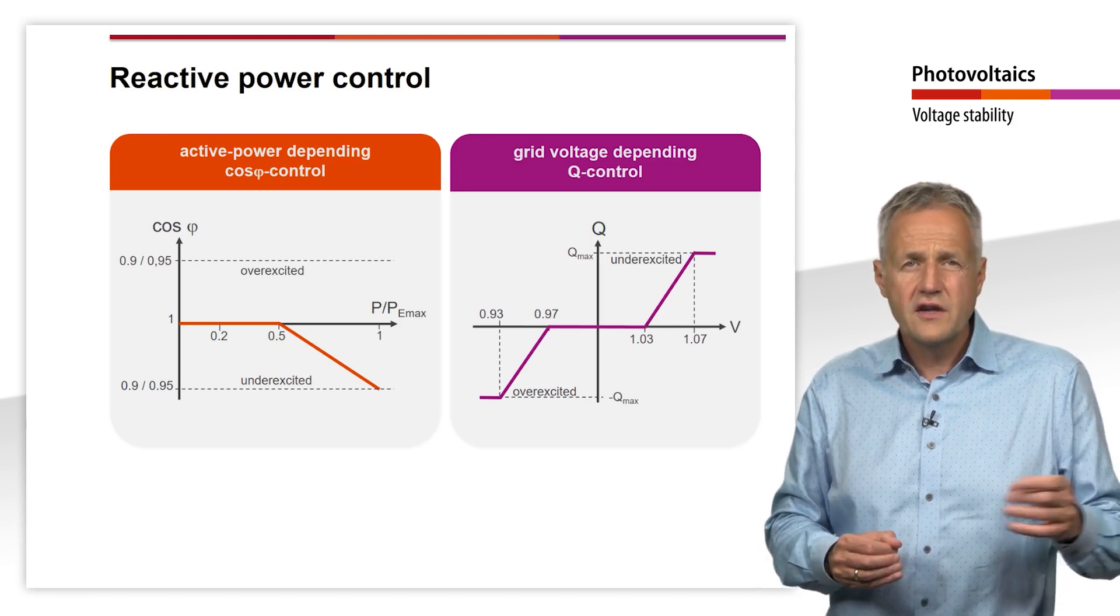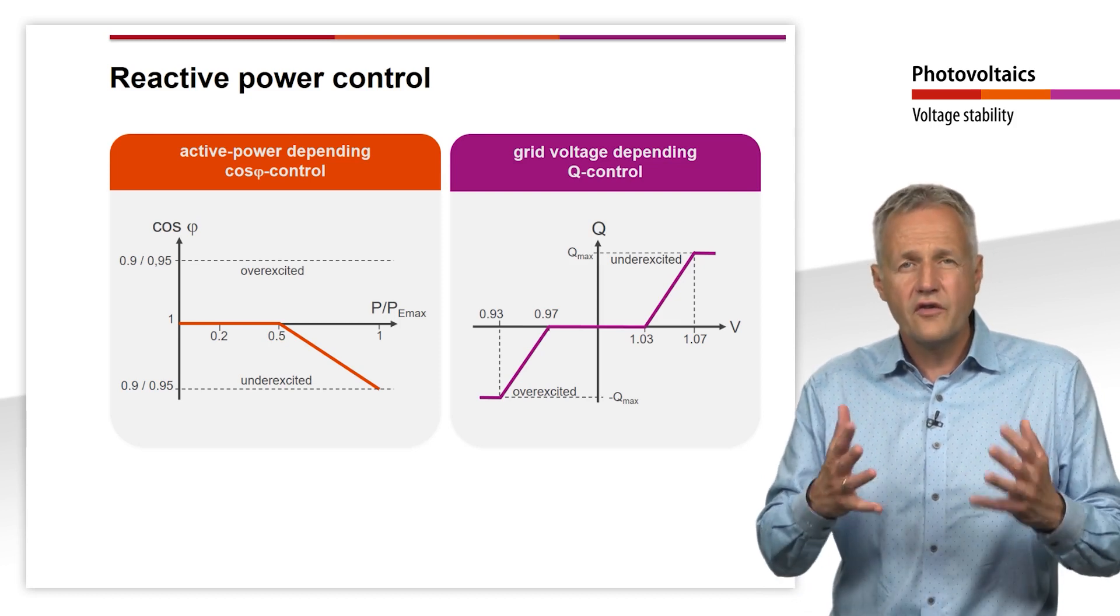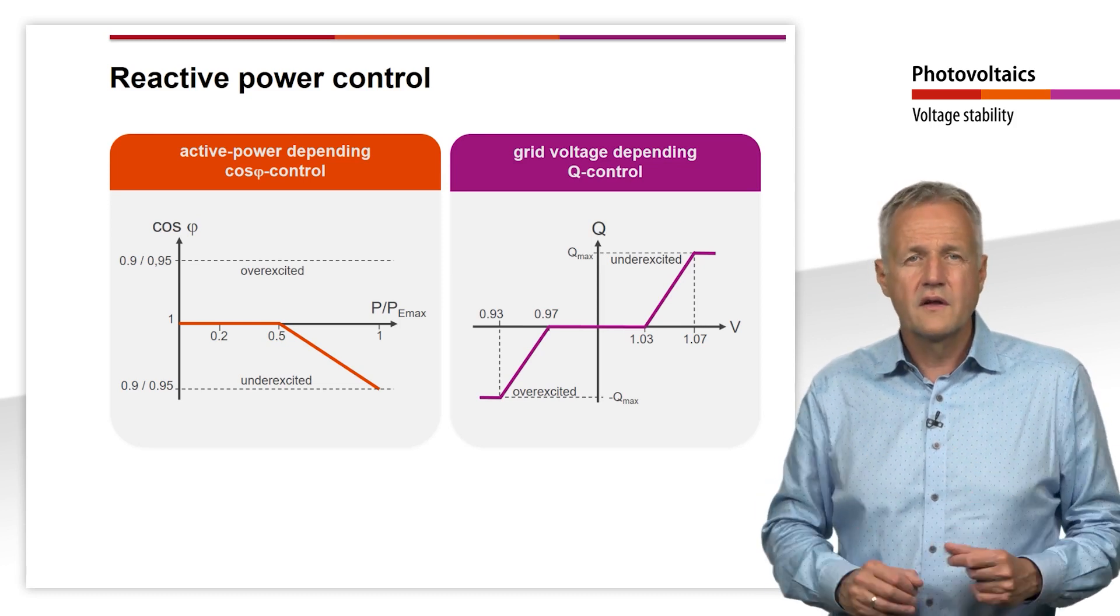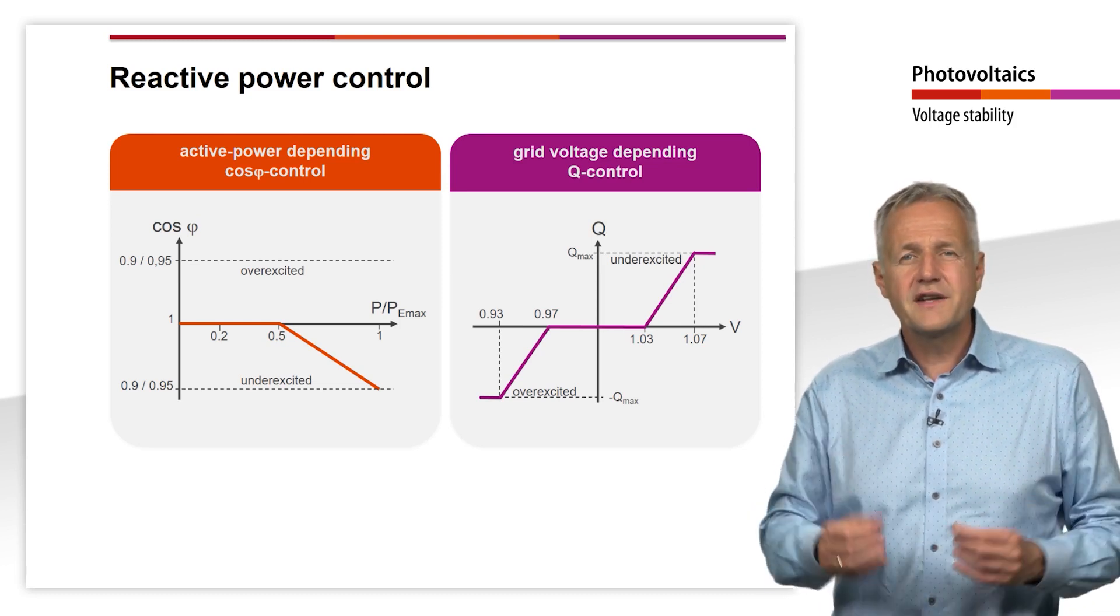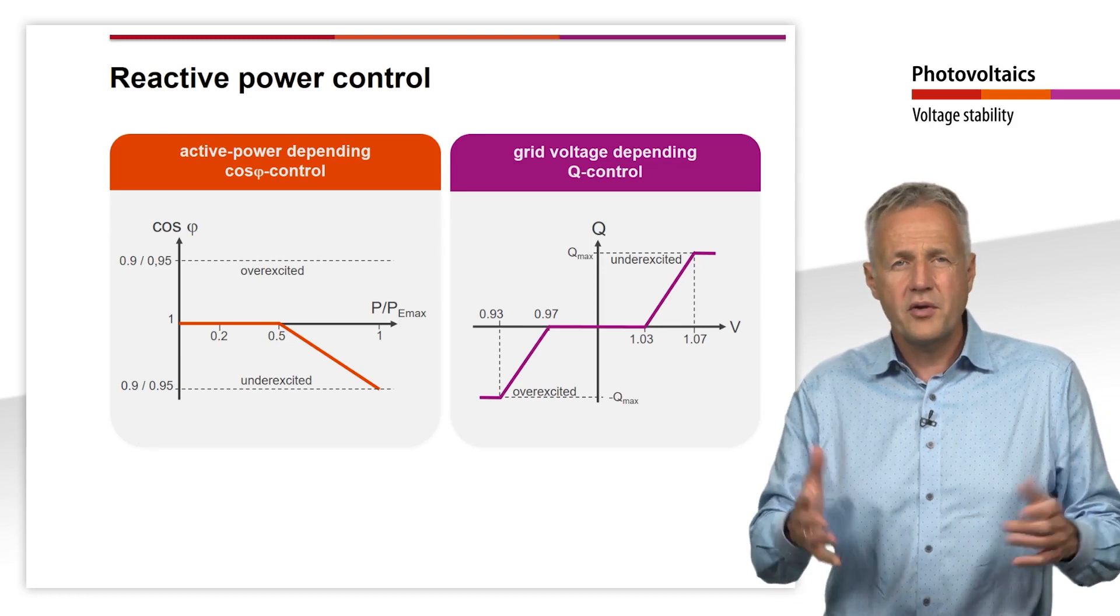The advantage of QV control is that the PV systems can also contribute to voltage stability when the grid voltage is too low. In Germany, the grid operator decides which method is to be used by a plant.